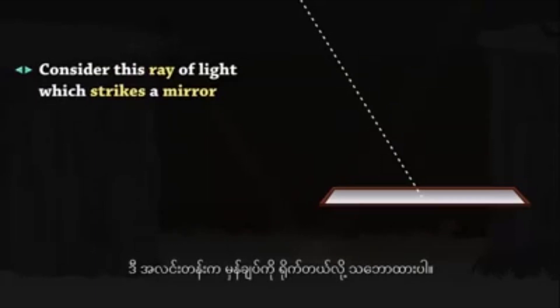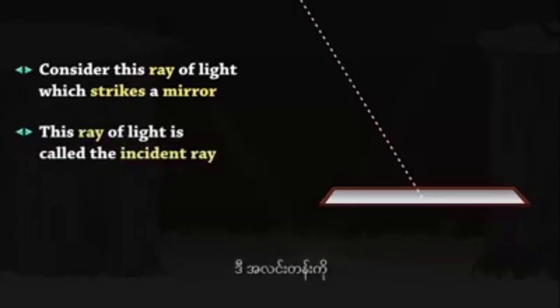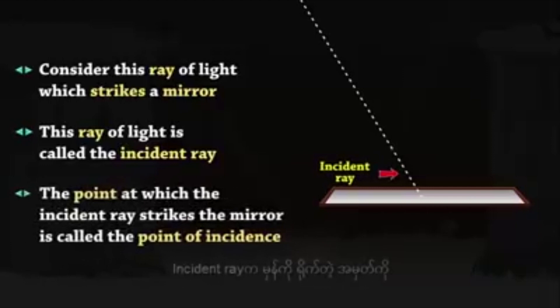Consider this ray of light which strikes a mirror. This ray of light is called the incident ray. The point at which the incident ray strikes the mirror is called the point of incidence.